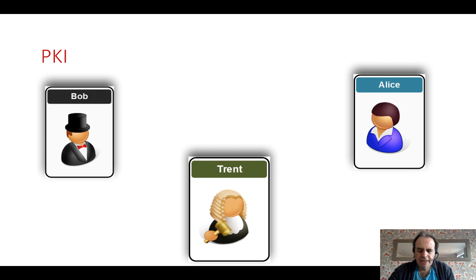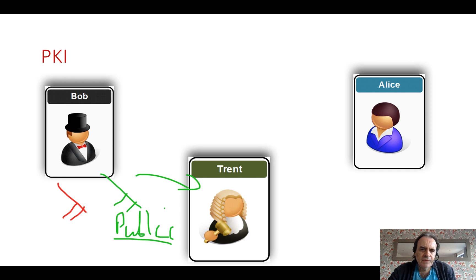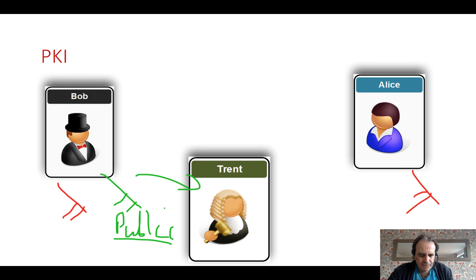Let's start by looking at our existing method, typically known as PKI or Public Key Infrastructure. We have two keys: a secret key (the red key) and a public key that we can distribute. We contact Trent, who gives us a key pair, and we then distribute the public key to whoever wants to send us encrypted messages.